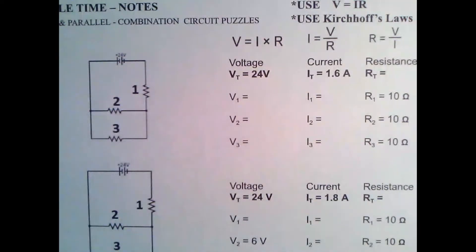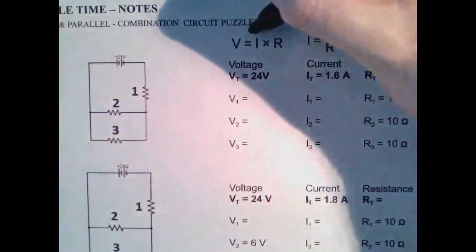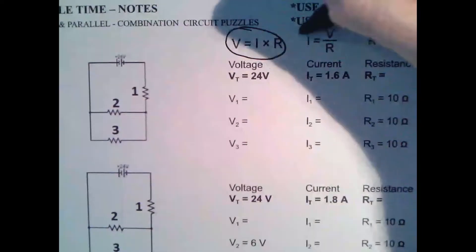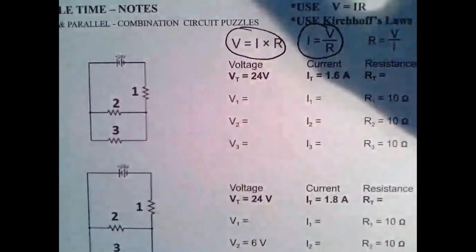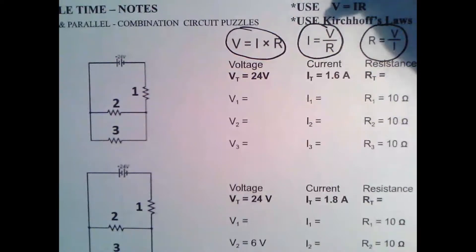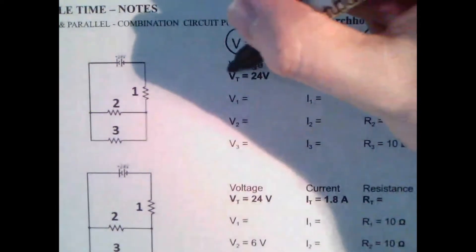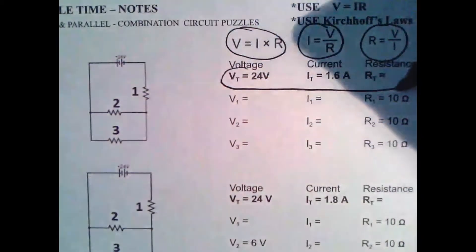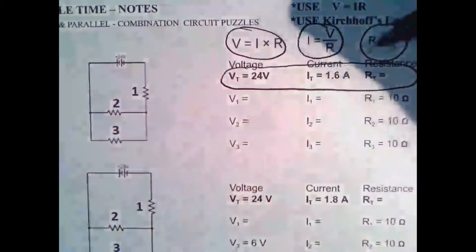So we're going to take a look at what happens when you have circuits that are both in series and in parallel and how do we use all the rules that we used before for these types of puzzles or these types of circuits. So the great thing is we can still use all of these formulas from before. V equals IR, I equals V over R, R equals V over I. So these are really useful. Whenever you have any two pieces, you can always find the last one by using one of these formulas at the top.